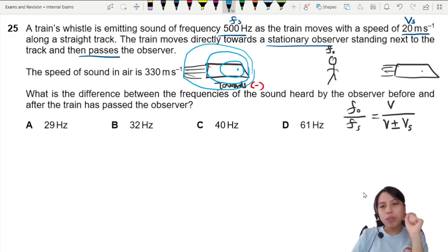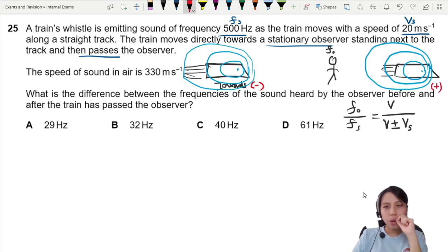If the train is moving away from you—this is a whistle, I do not make whistles—then that is when you use positive. Away.